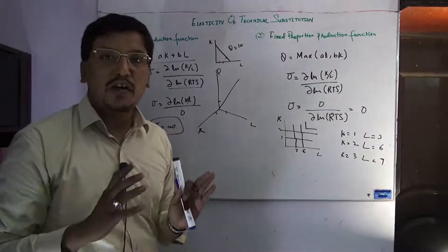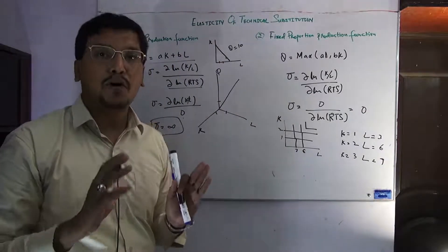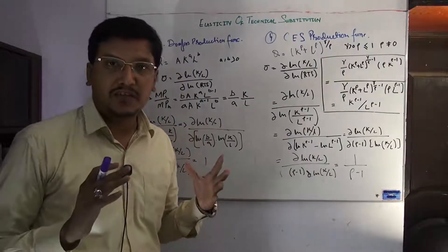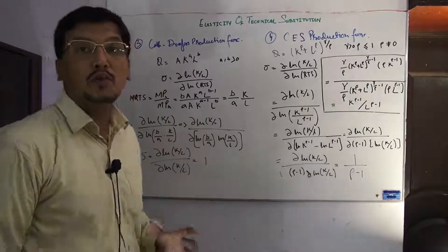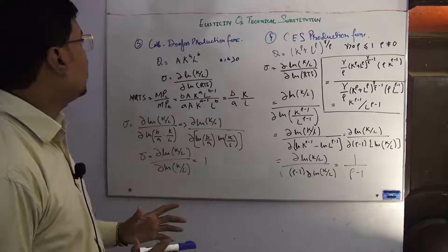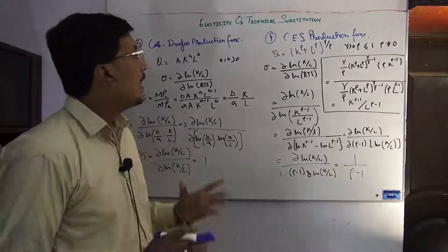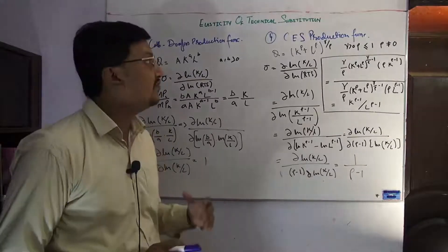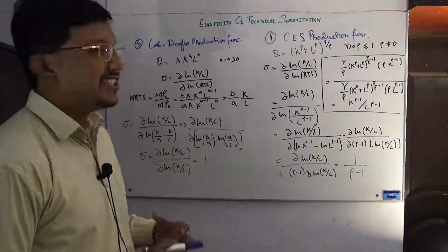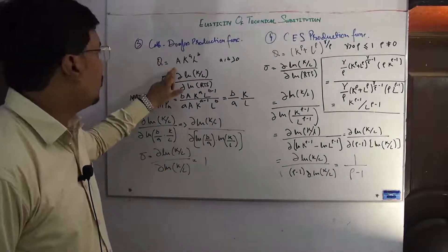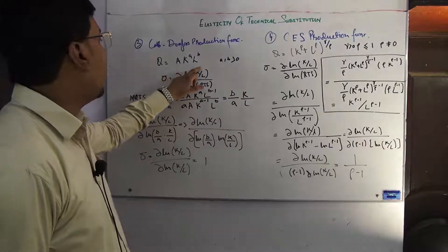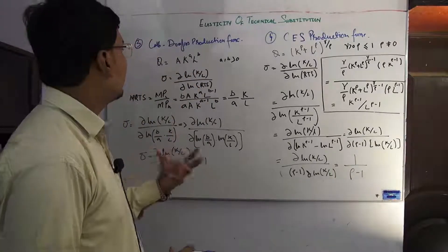We have discussed two production functions so far. Now we are discussing two more important production functions commonly used in microeconomic analysis: the Cobb-Douglas production function and the CES production function. The Cobb-Douglas production function has two inputs, L and K, each raised to a power representing its elasticity.